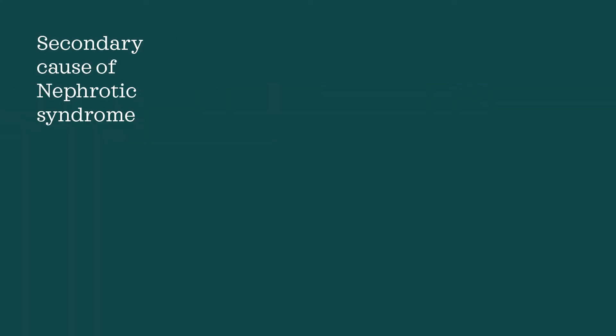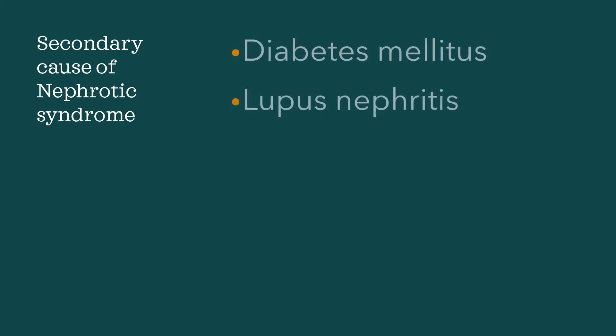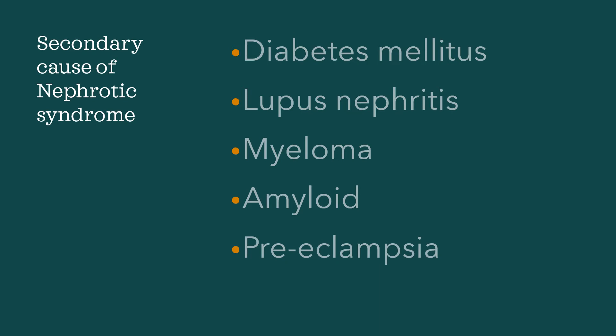Now let's talk about the systemic illnesses that can actually cause nephrotic syndrome. You've probably heard of diabetic nephropathy. Then there's lupus nephritis — renal disease in SLE where autoantibodies attack the kidney. Myeloma patients have abnormal plasma cells which do not make normal antibodies but rather a type of protein. Amyloids in the kidney may lead to proteinuria as it harms the nephron. And lastly, severe preeclampsia may also be associated with nephrotic syndrome.